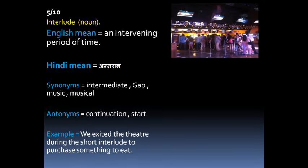The next word is 'Interlude.' Interlude is very simple — it means intermission or gap. When you go to the movies, there is an interval — that is called an interlude. Interlude also has a second meaning: it refers to a musical piece or interlude in music. So interlude has two meanings: one is a gap, and one is a musical piece.